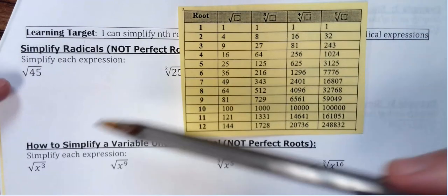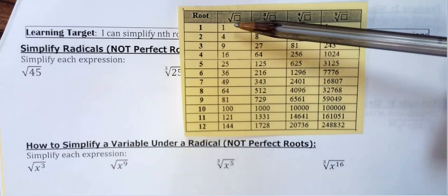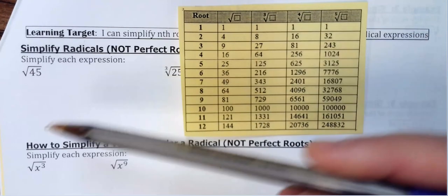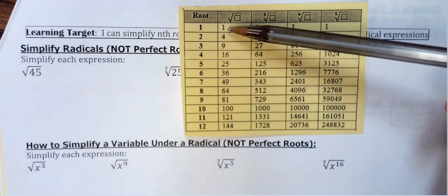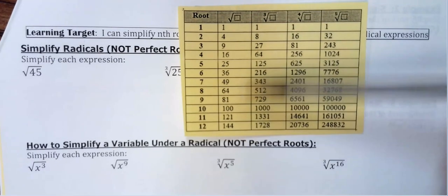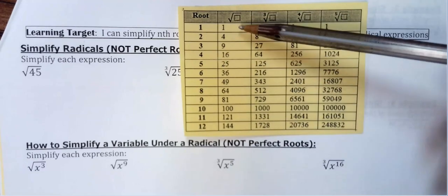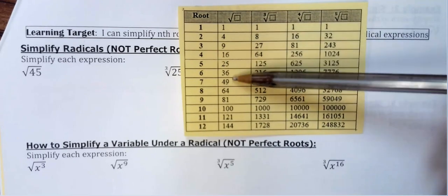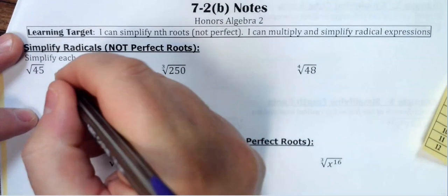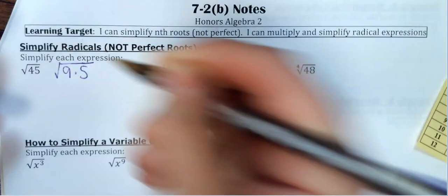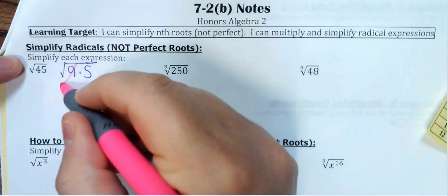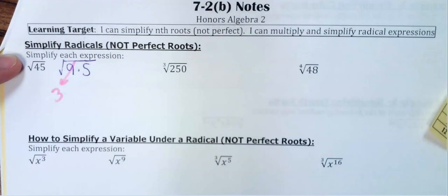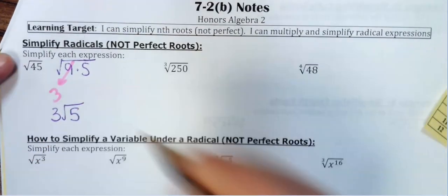I have a square root of 45. If I'm trying to break this down, I need the biggest number on my list of perfect squares that'll divide into 45. 45 is not on the list, so I start going down the list. I know that 9 is the biggest number that's going to divide into 45. I rewrite it as 9 times 5 — 9 being the biggest perfect square — then take the square root of 9, which is 3, that comes out in front. So that's 3√5.